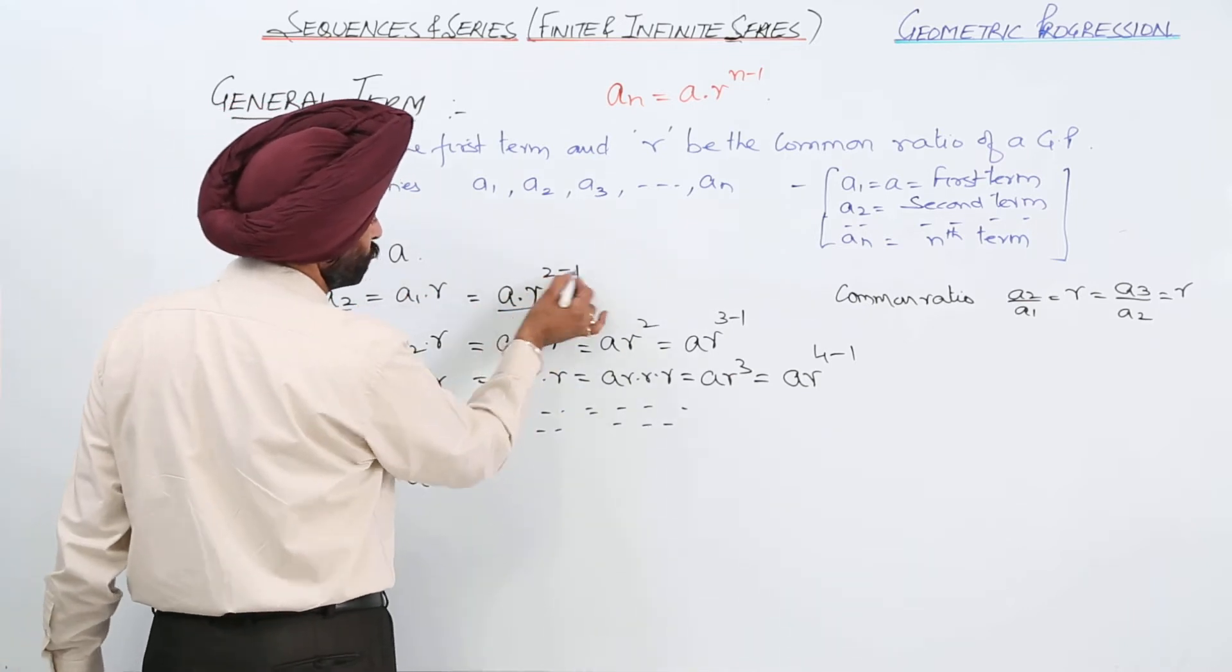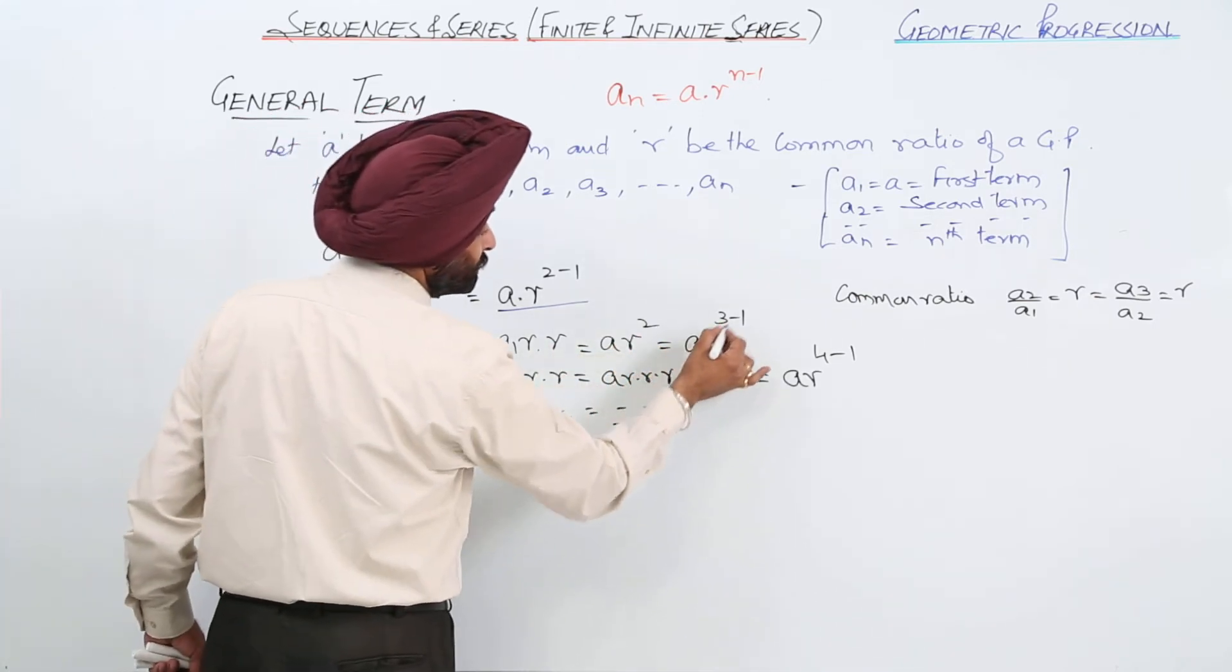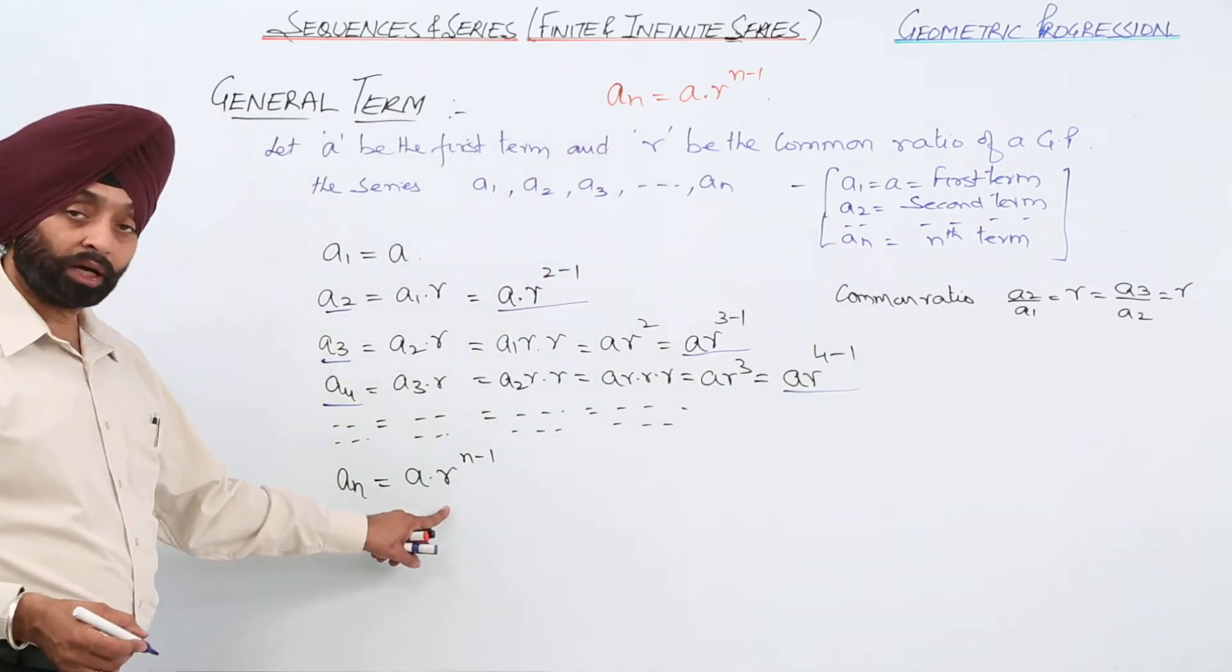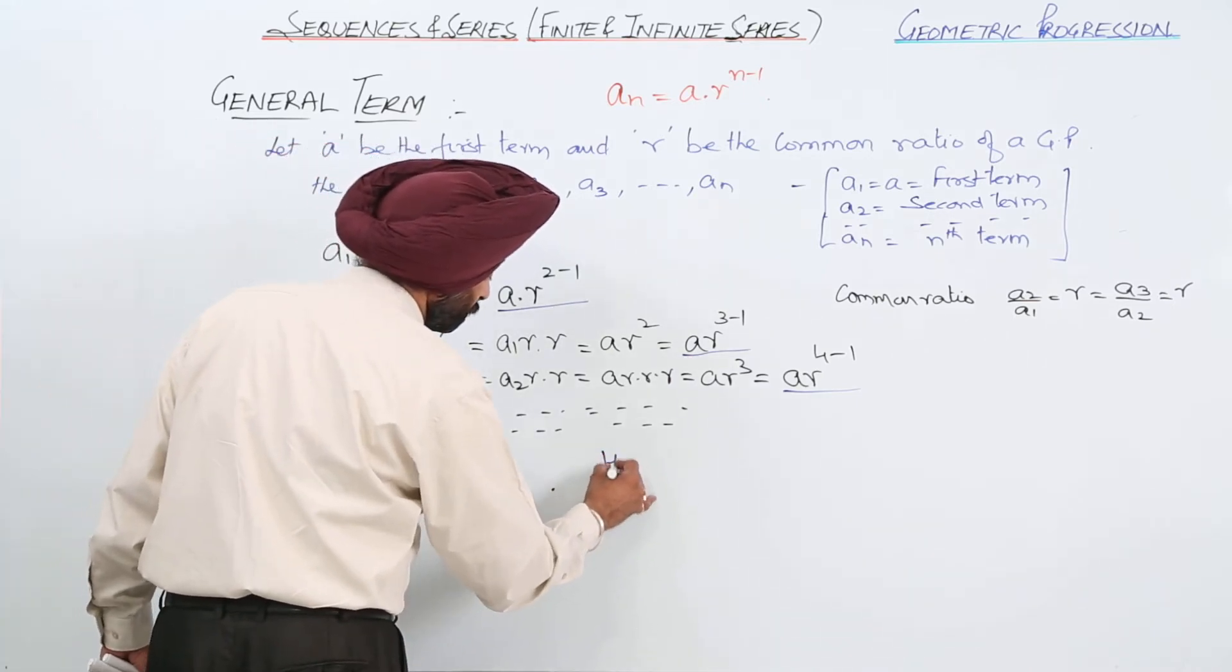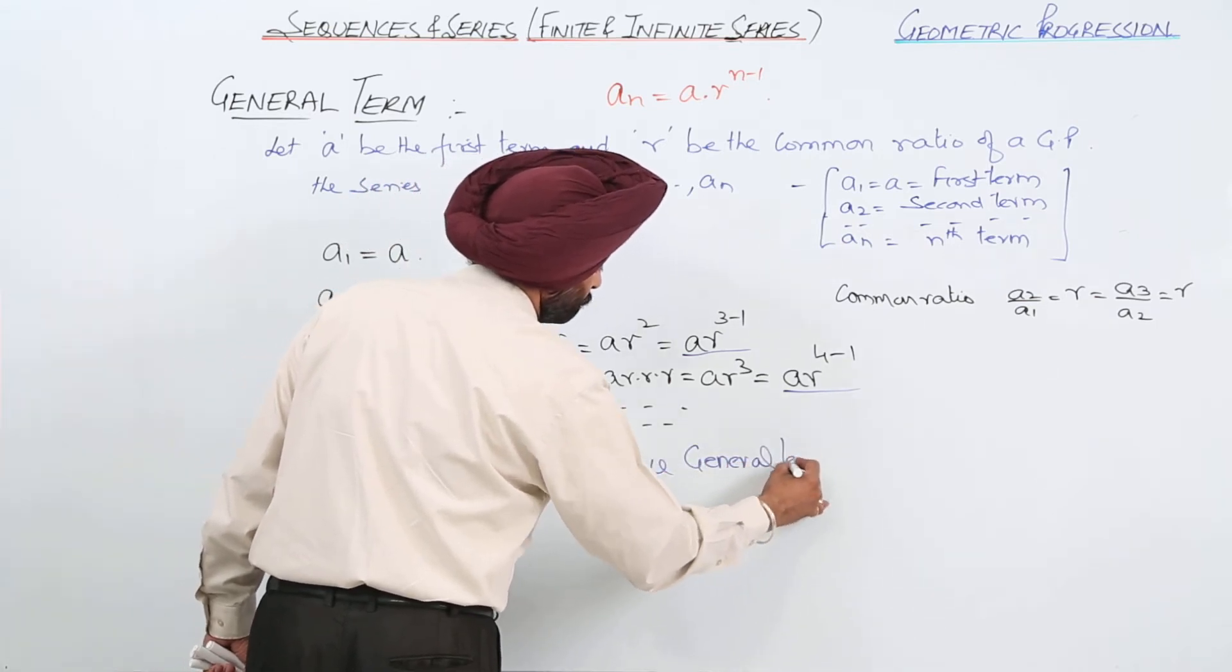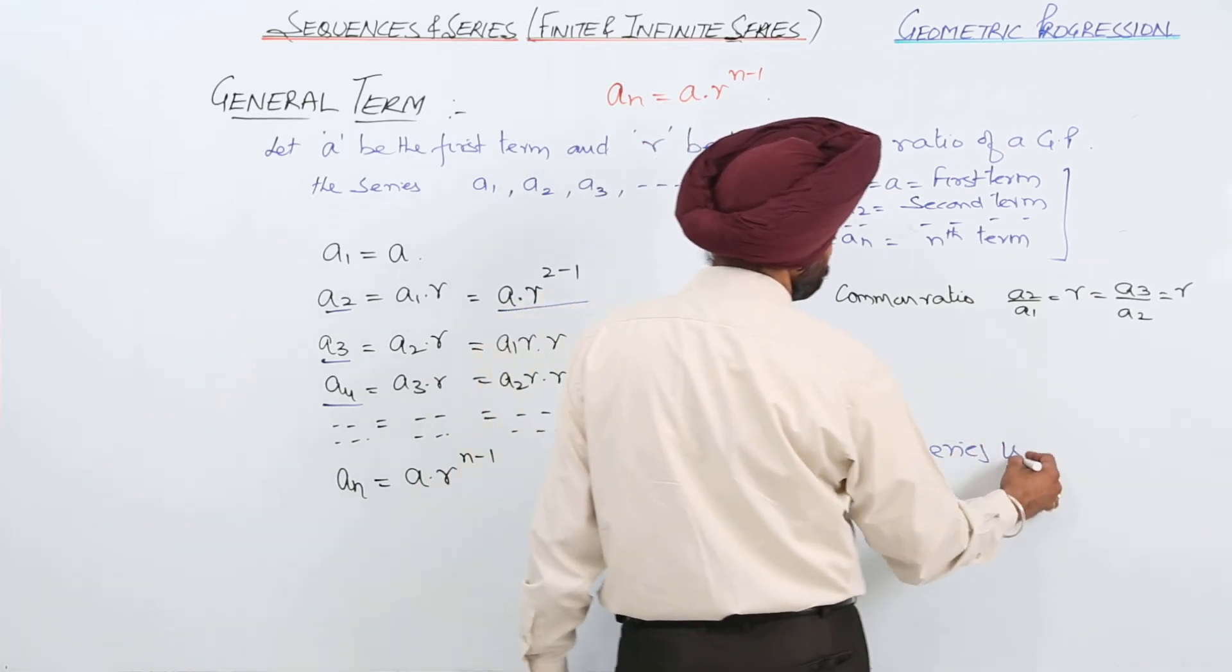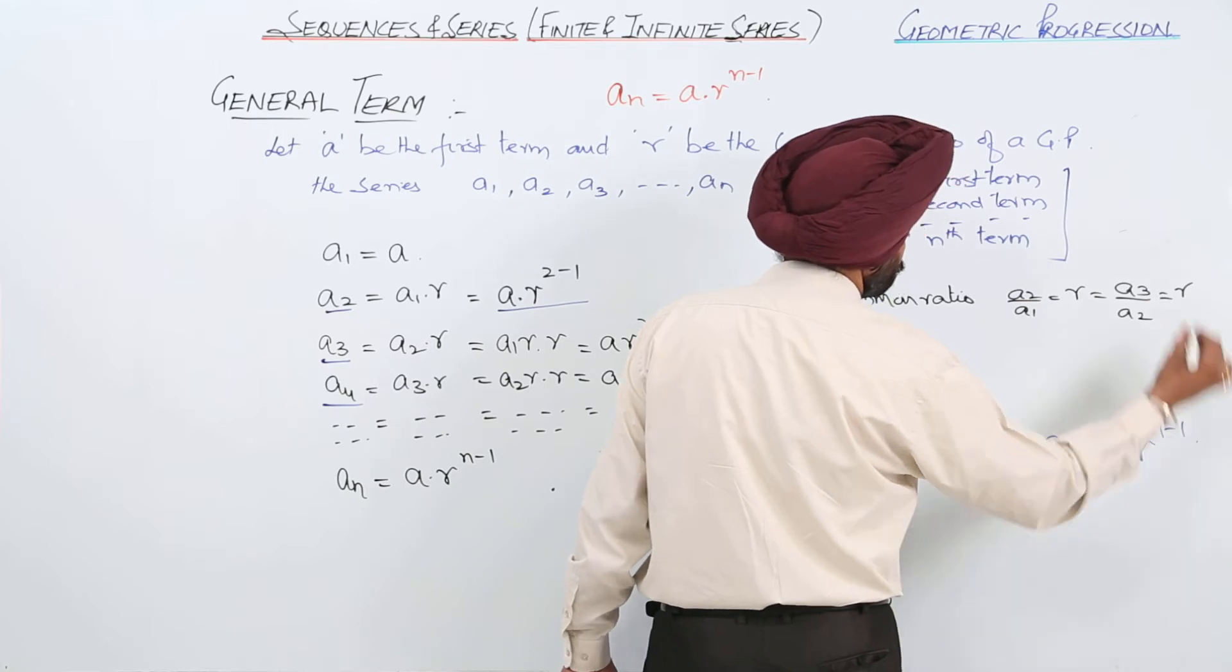Just check it: A2 is ar raised to 2 minus 1, this is 2 minus 1. A3 is ar raised to 3 minus 1, A4 is ar raised to 4 minus 1. Similarly, An is a times r raised to n minus 1. Hence, the general term of GP series is An equals ar raised to n minus 1.